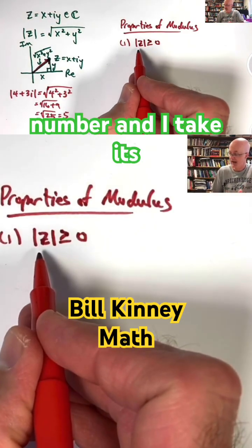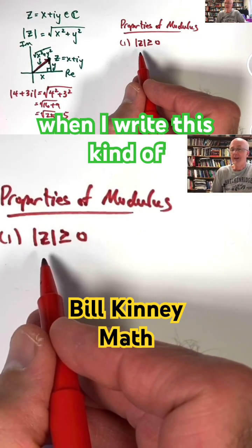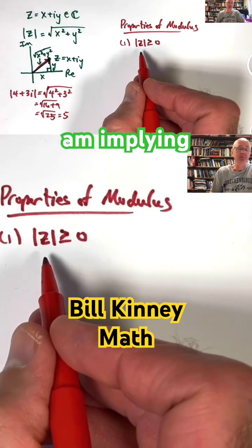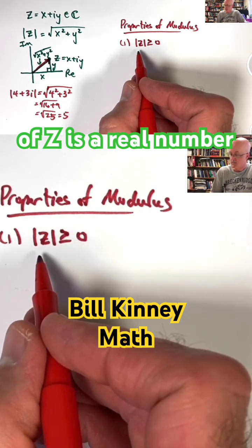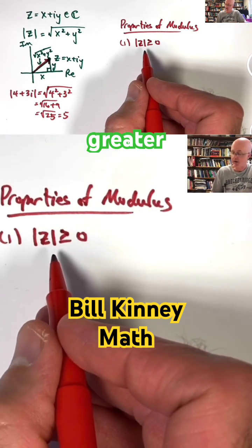If z is any complex number and I take its modulus, when I write this kind of inequality, I am implying that the modulus of z is a real number and it's not negative. It's greater than or equal to 0.